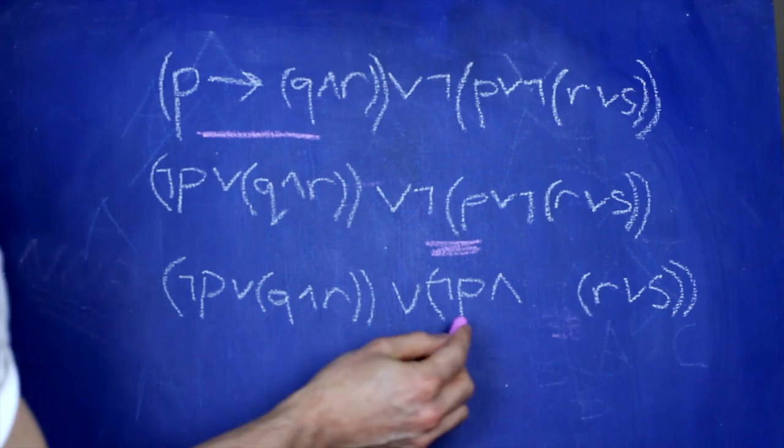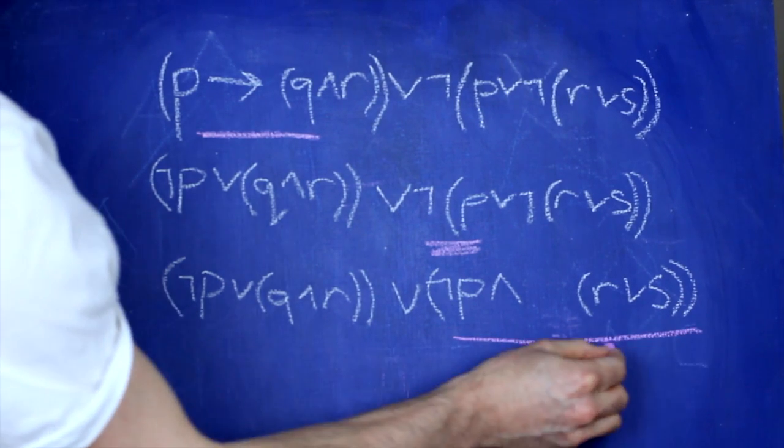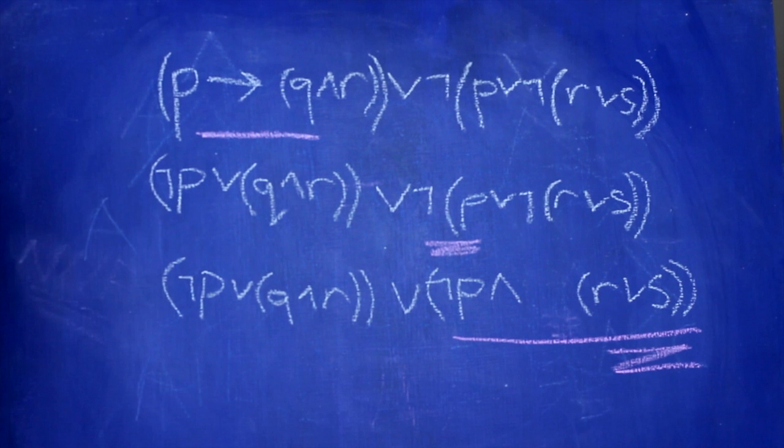Step three, we have to make sure the disjunction and conjunction symbols are in the right order. Have a look at this one here. It's a conjunction where one of the conjuncts is a disjunction.